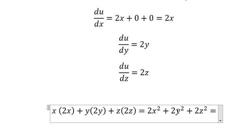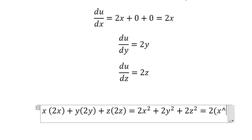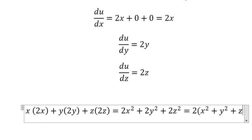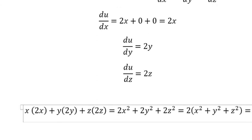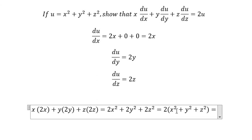Because we have number 2, number 2, and number 2, we can do factorization. We know that x² + y² + z² equals u, and we can change this to 2u.